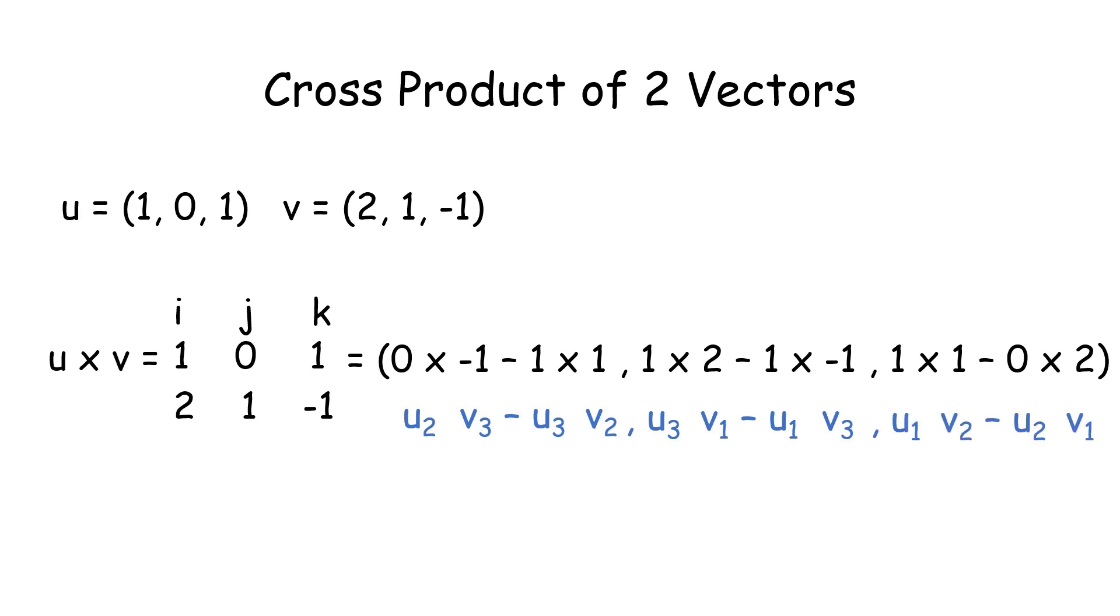And then we have u1 times v2 minus u2 times v1, which is 1 times 1 minus 0 times 2.